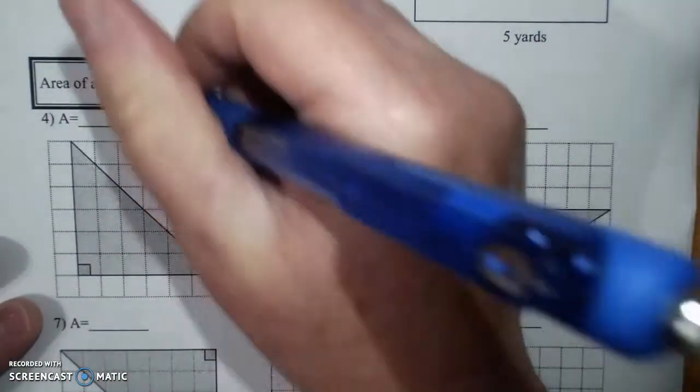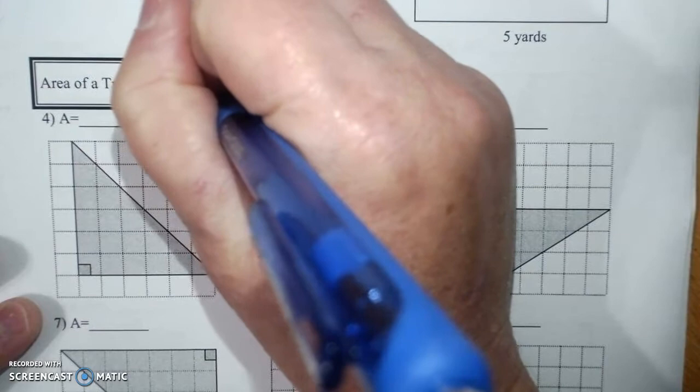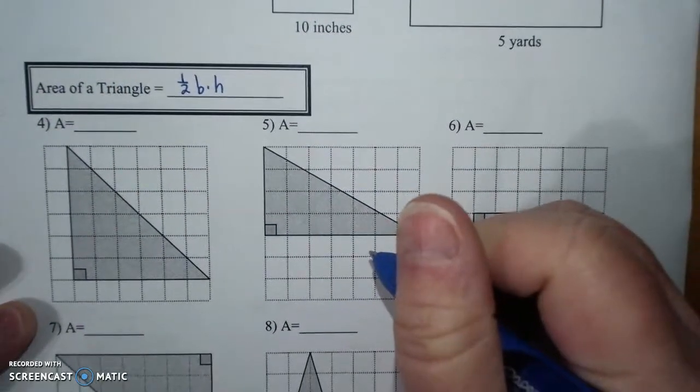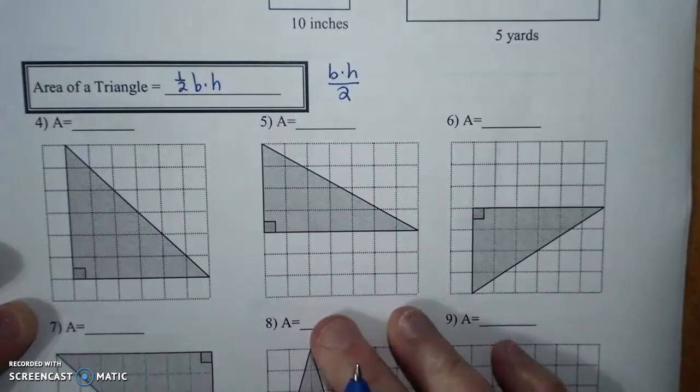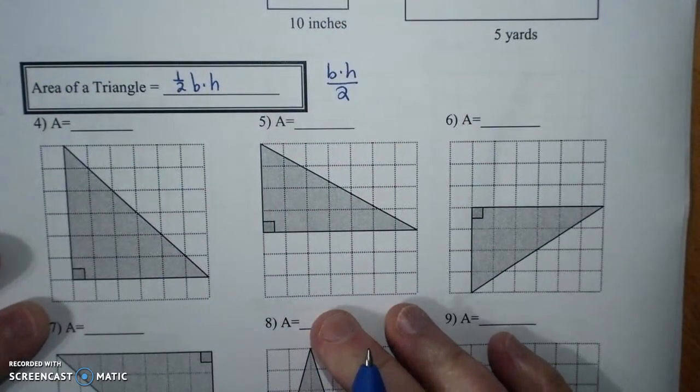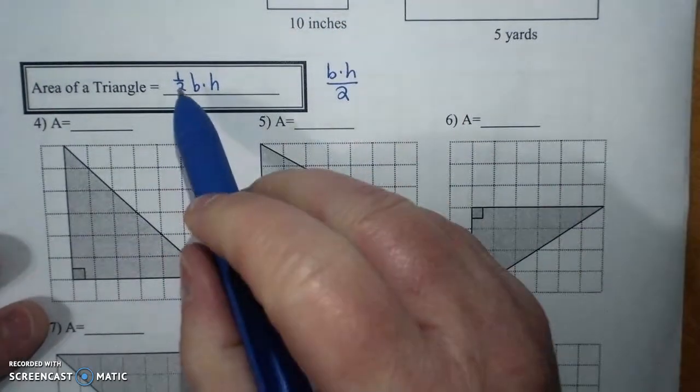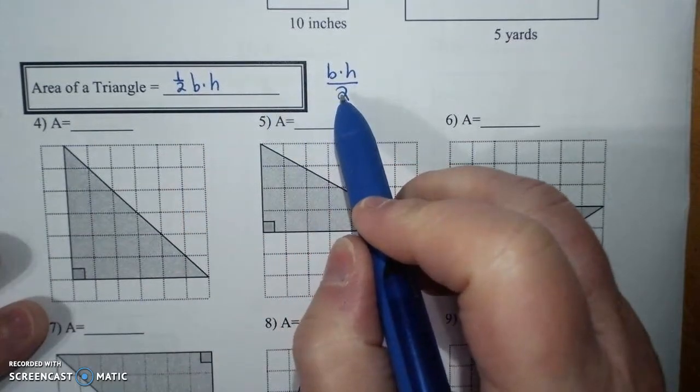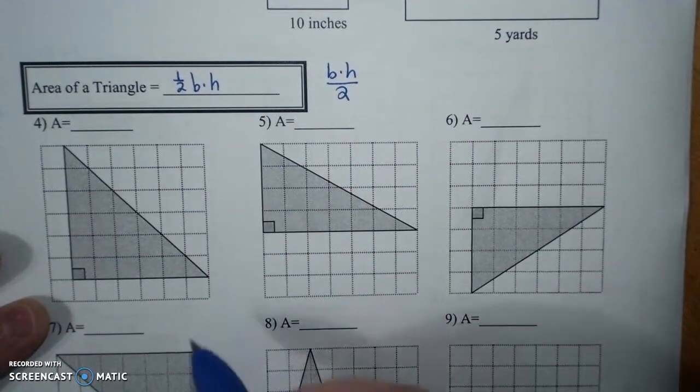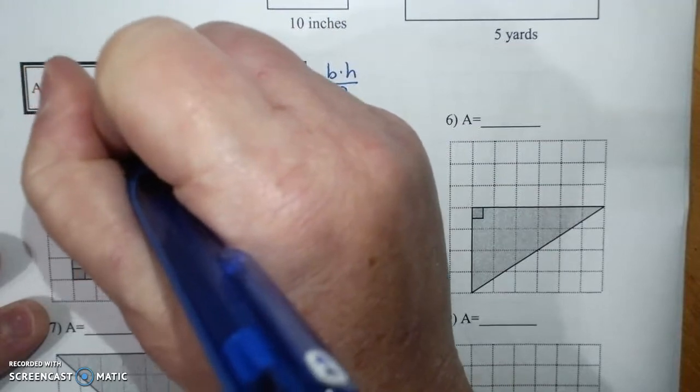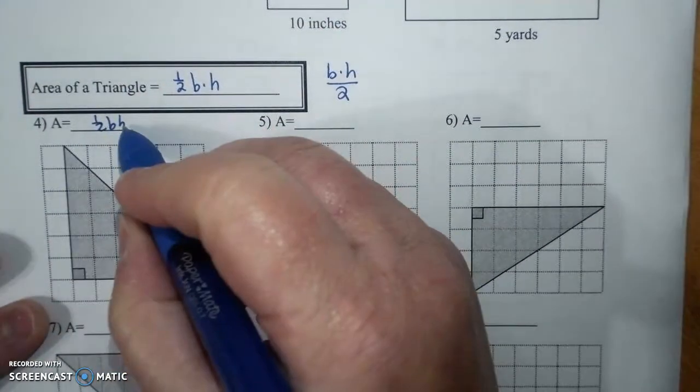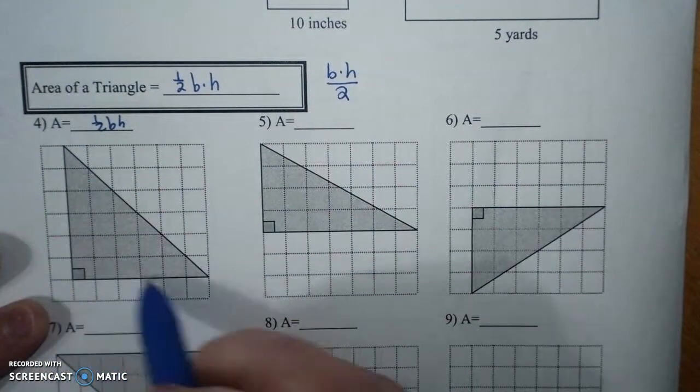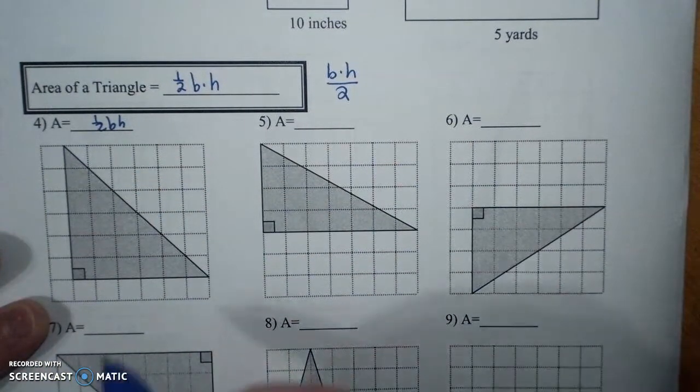Triangle. Couple of different ways. Half times base times height. Or base times height divided by 2. Same thing. The common mistake is you forget your half. Or you forget to divide by 2. So, one half base times height. My base. Remember my height is always perpendicular. So, one of them is a base. And one of them is a height on a right triangle.